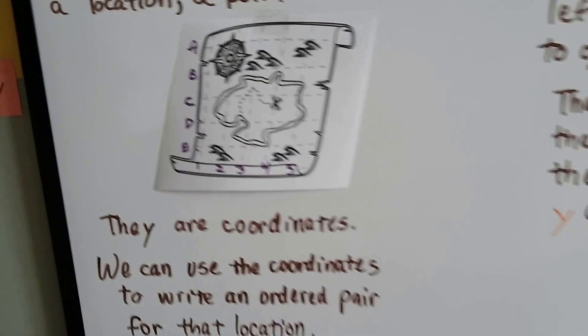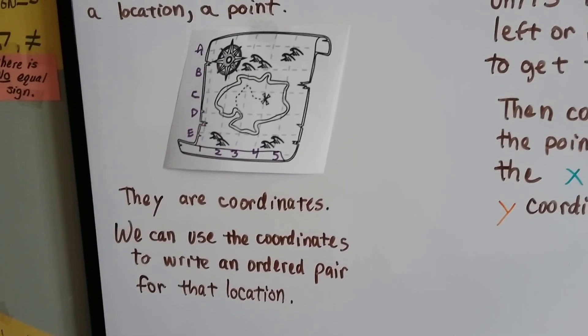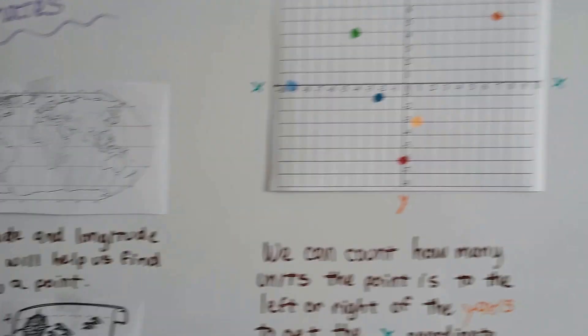Well, these are coordinates. And we can use the coordinates to write an ordered pair for that location. So let's take a look at these.